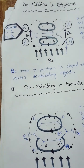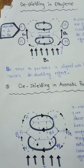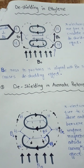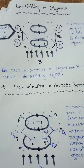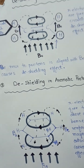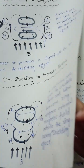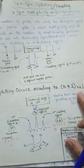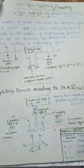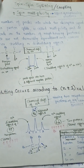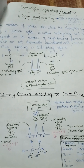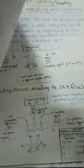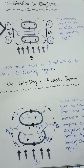These are the magnetic anisotropic effects. In our next lecture, we will study spin-spin splitting, spin coupling, or spin multiplicity. Thanks for watching this video.